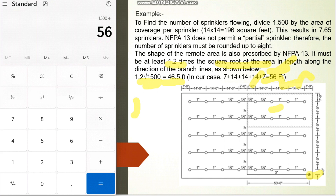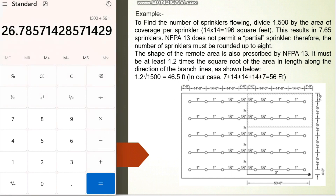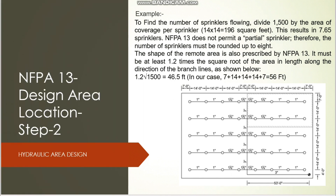To find the width: 1500 ÷ 56 = 26.78 feet. So you consider 26.78 feet for the width of this hydraulic area. As I said, it is very easy if we have a rectangle-shaped building like this.